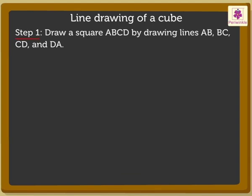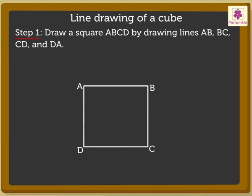Let us begin with the line drawing of a cube. Step 1: Draw lines AB, BC, CD, and DA to form square ABCD. This is the front face of the cube.